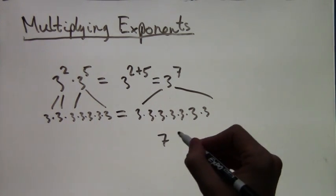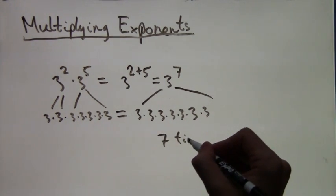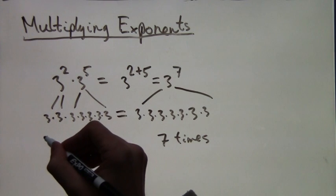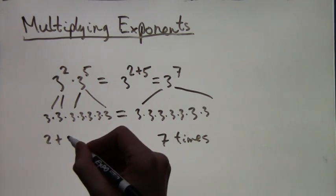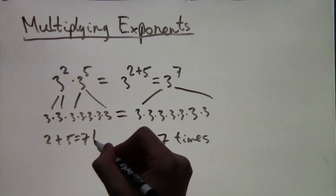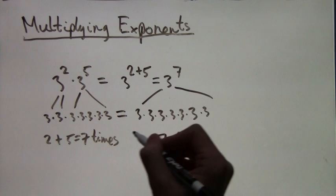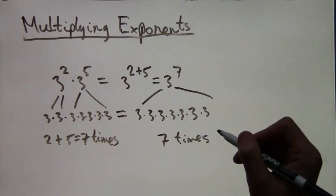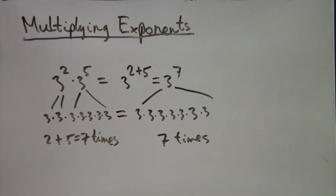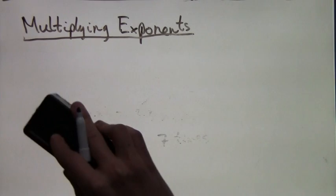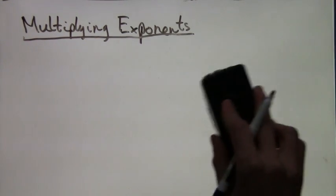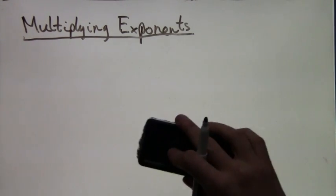So really, when we're adding the powers of the multiplied exponents, all that means is that the total number of threes when we multiply is added. We had 2 in squared and 5 in the fifth power and end up with 7.